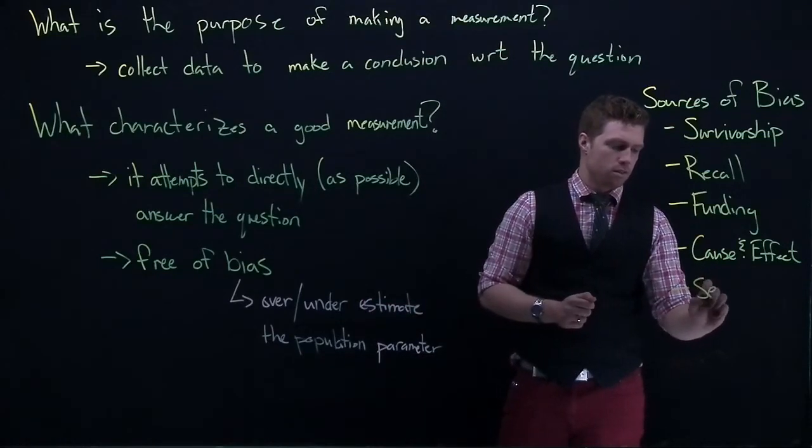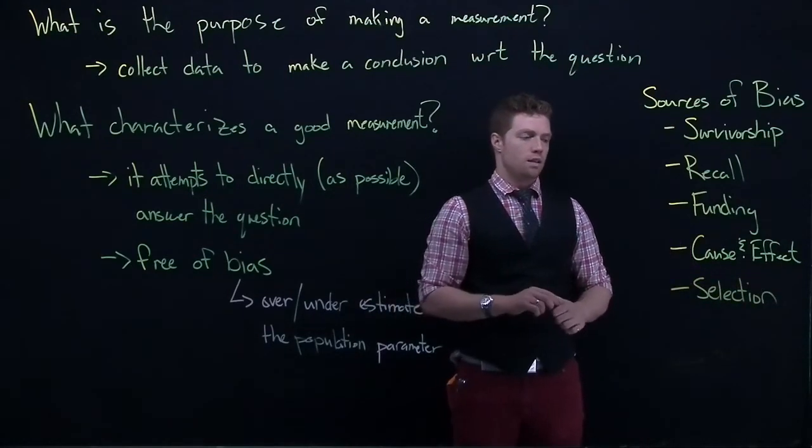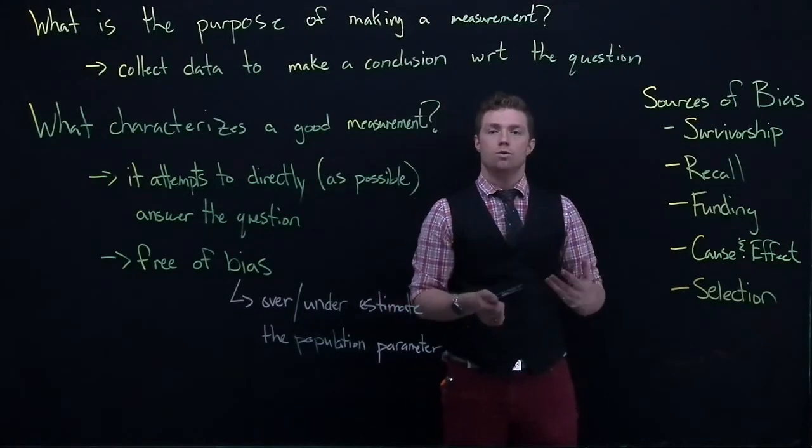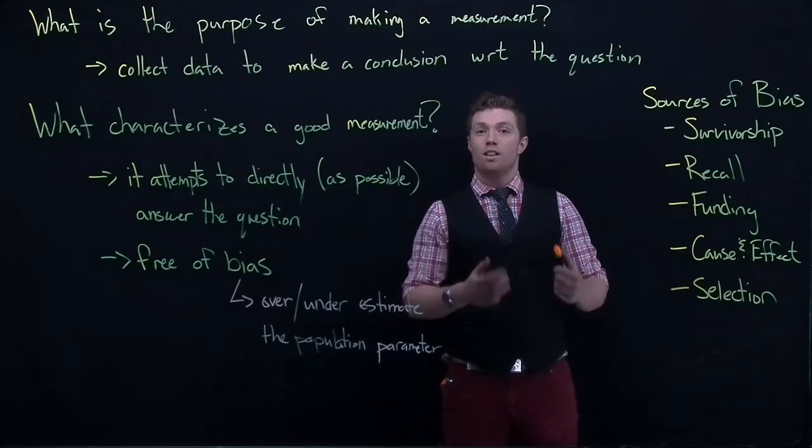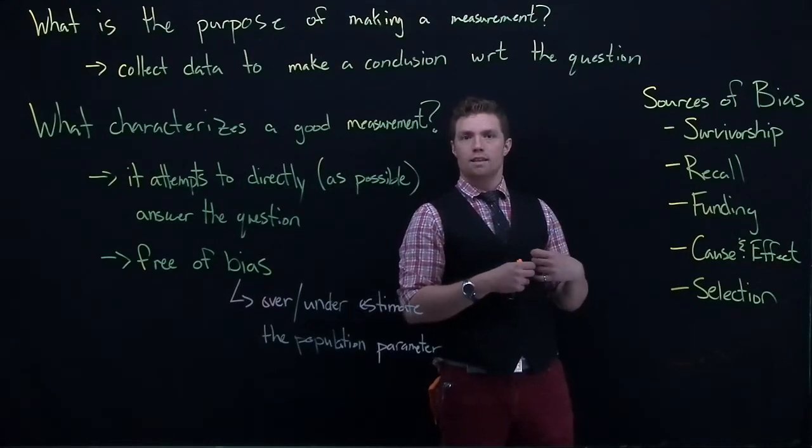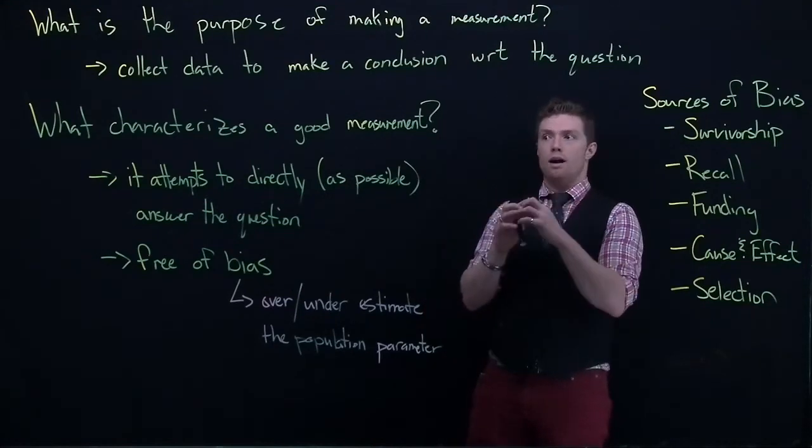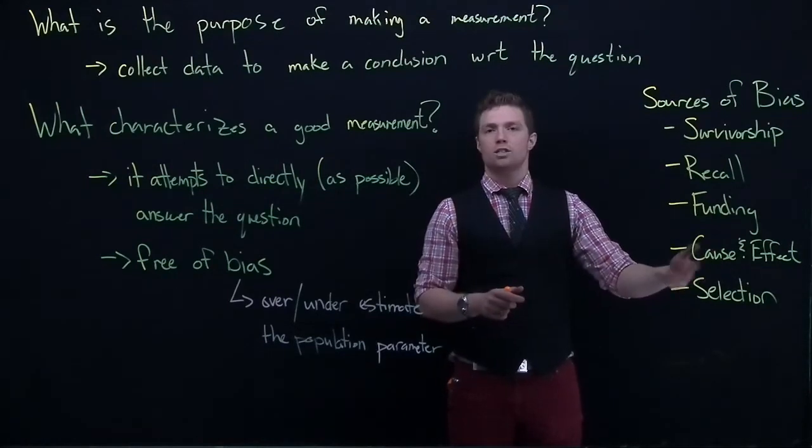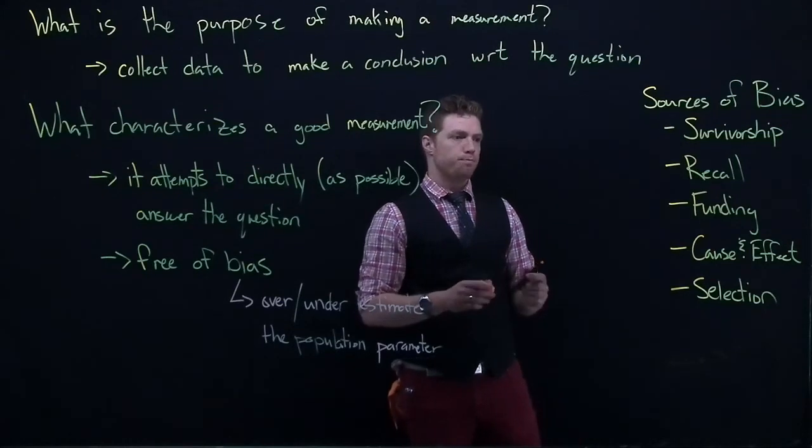All right. Another one is called selection bias. And selection bias is kind of one of the core ones is self-selection. So let's say that you're wanting to do a survey and you're asking for volunteers. Well, the problem with volunteers is that you're getting people who are self-selecting themselves out of the survey and people who are selecting themselves into the survey. And so the sample that you're looking at really might not be representative of the population that you're hoping to get. And so selection can often cause a bias or an over and underestimation of this population parameter.